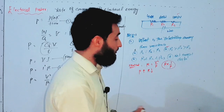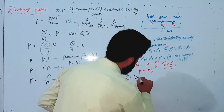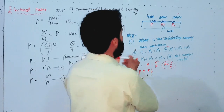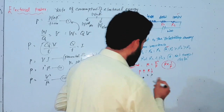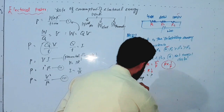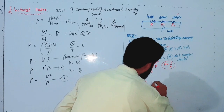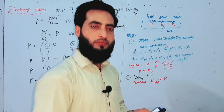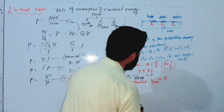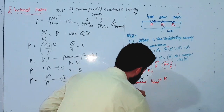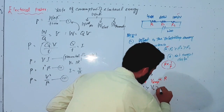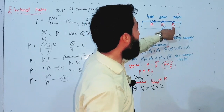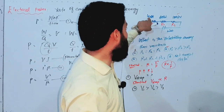Now, what is the relationship between the voltage drops across the resistors? In a series combination, voltage drop is directly proportional to resistance. So V1 drop will be greater than V2 drop, and V2 drop will be greater than V3. The minimum voltage drop will be across the 100W bulb (least resistance) and the maximum drop will be across the 40W bulb (greatest resistance).